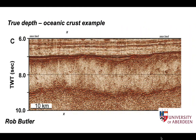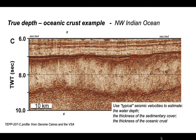Seismic images like this are displayed with a vertical scale that's not in depth but in two-way seismic travel time. In order to understand the geology here it's useful to convert this travel time scale to one in real depth, and we can do this using this example from the Northwest Indian Ocean. We can use typical seismic velocities to estimate the water depth, the thickness of the sedimentary cover, and the thickness of the oceanic crust upon which that sedimentary cover was deposited.